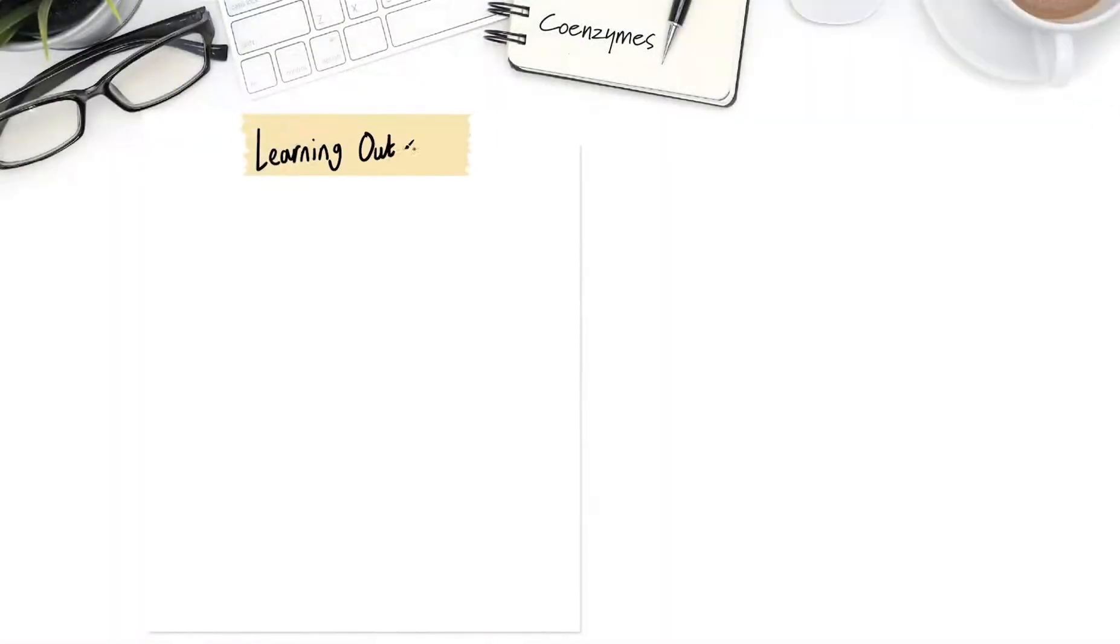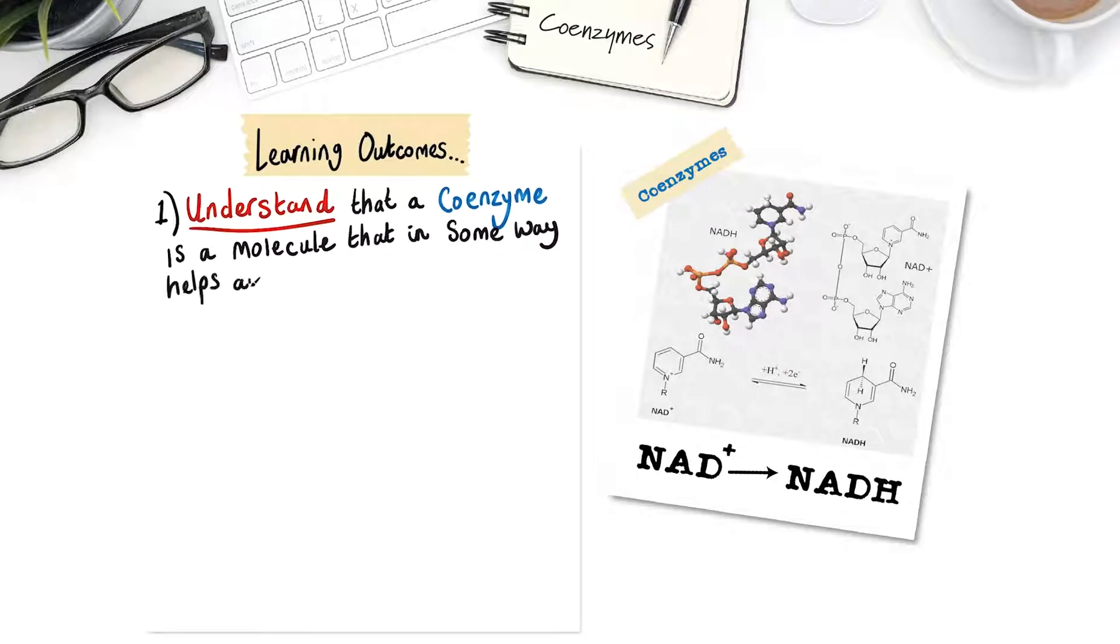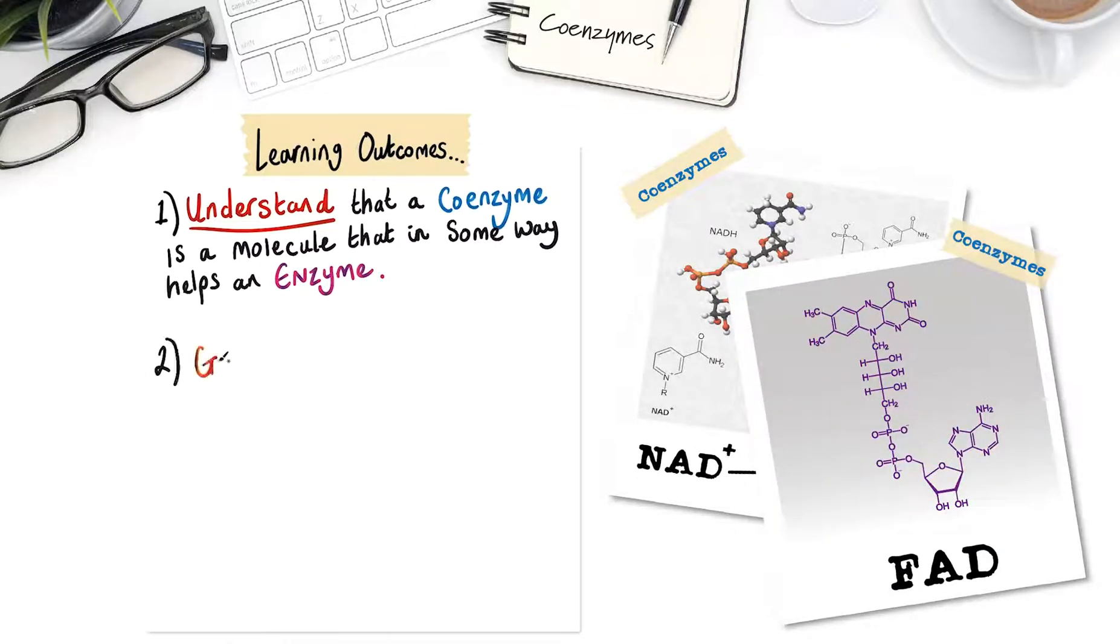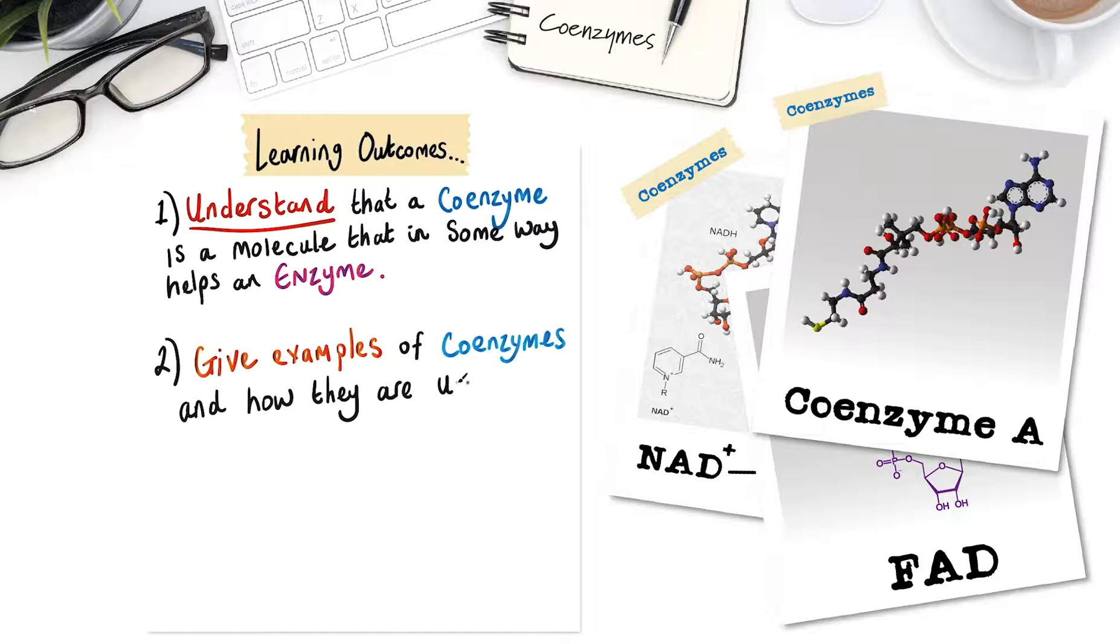Your learning outcomes this lesson are, number one, understand that a coenzyme is a molecule that in some way helps an enzyme. And number two, give examples of coenzymes and how they are used.